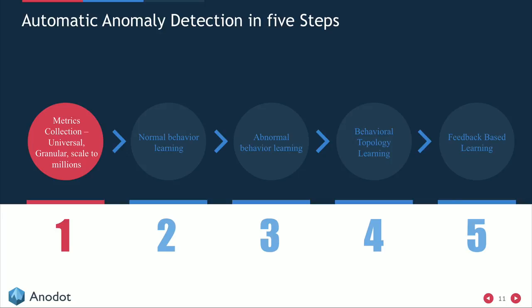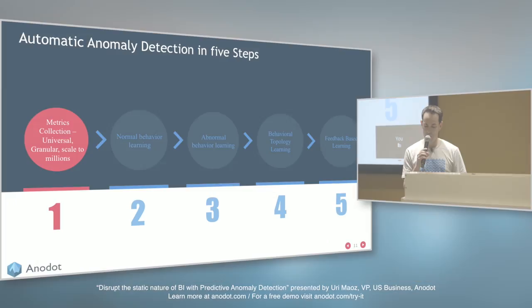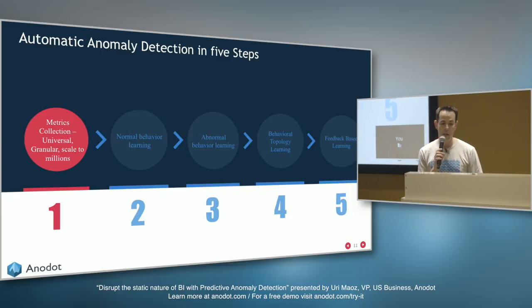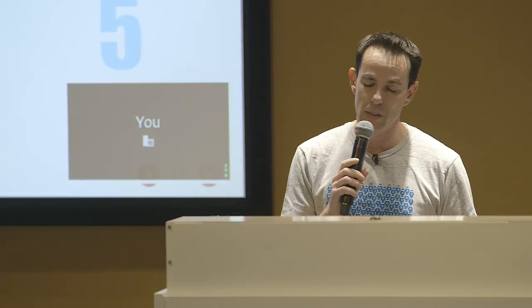Metric collection talks about the fact that you need to collect a lot of data. It needs to be universal, granular, and scale to millions of metrics. Universal means you want a system that answers various use cases and connects different data sources — not just one specific use case. You want to connect impression data, clicks, business data like revenue, and also IT data, so you can correlate what happened at the system level.